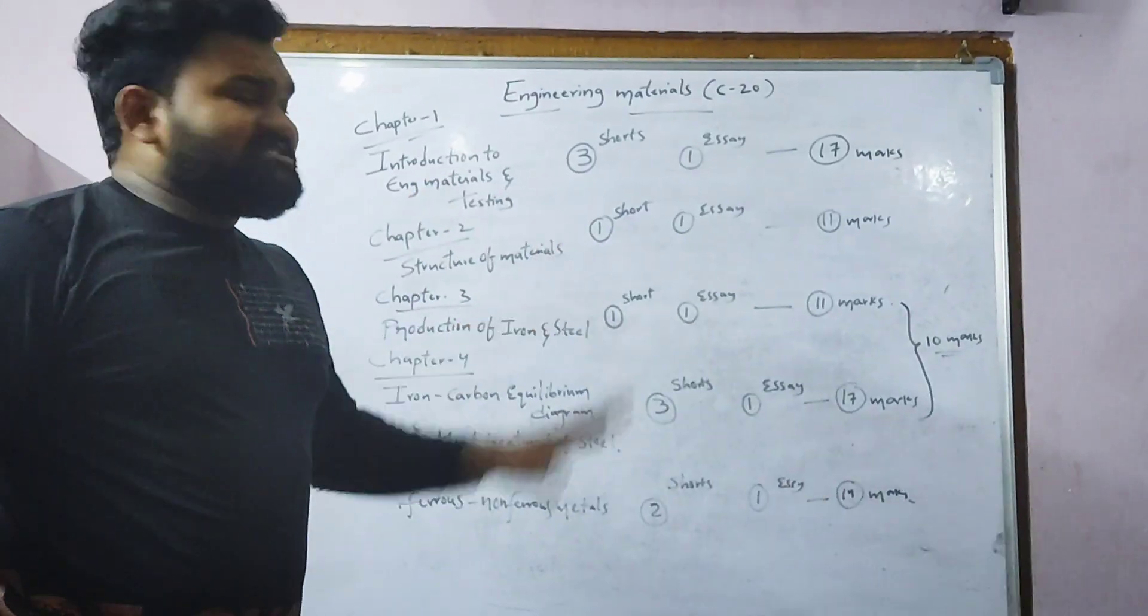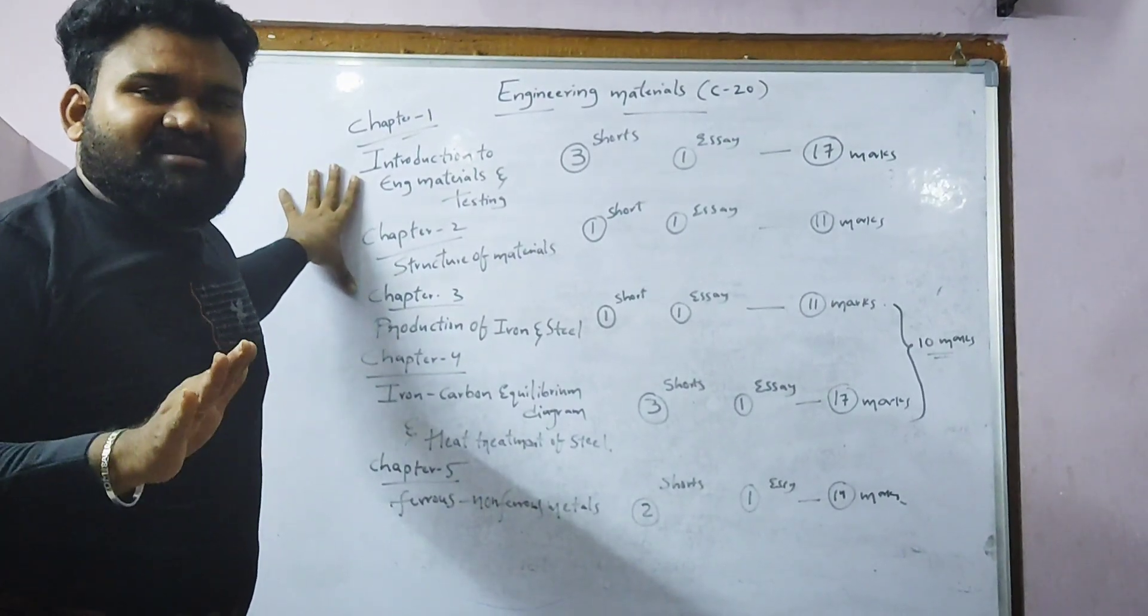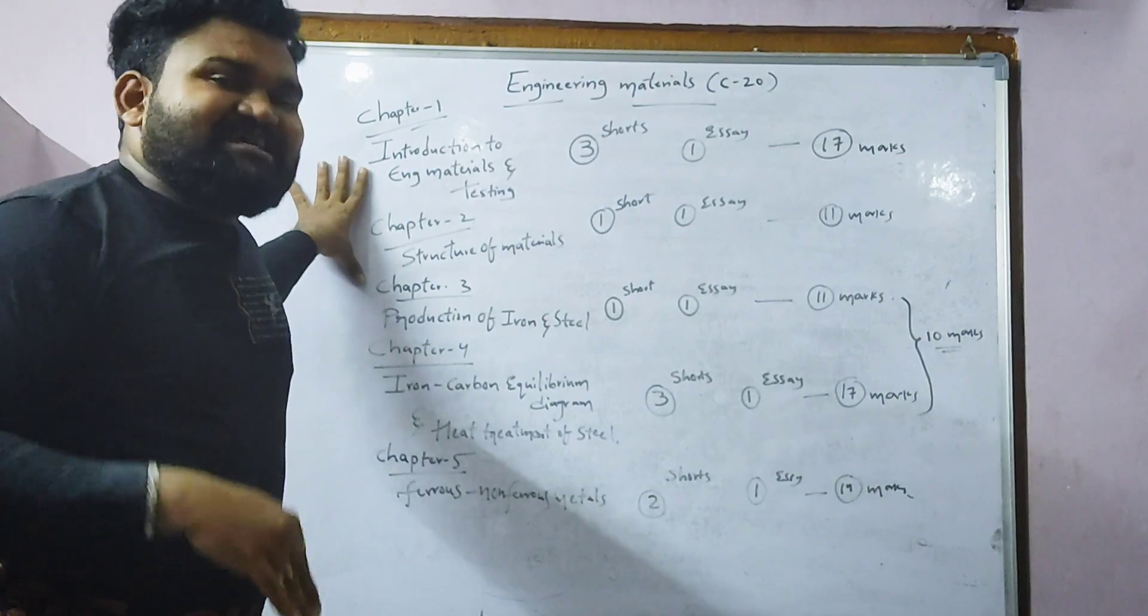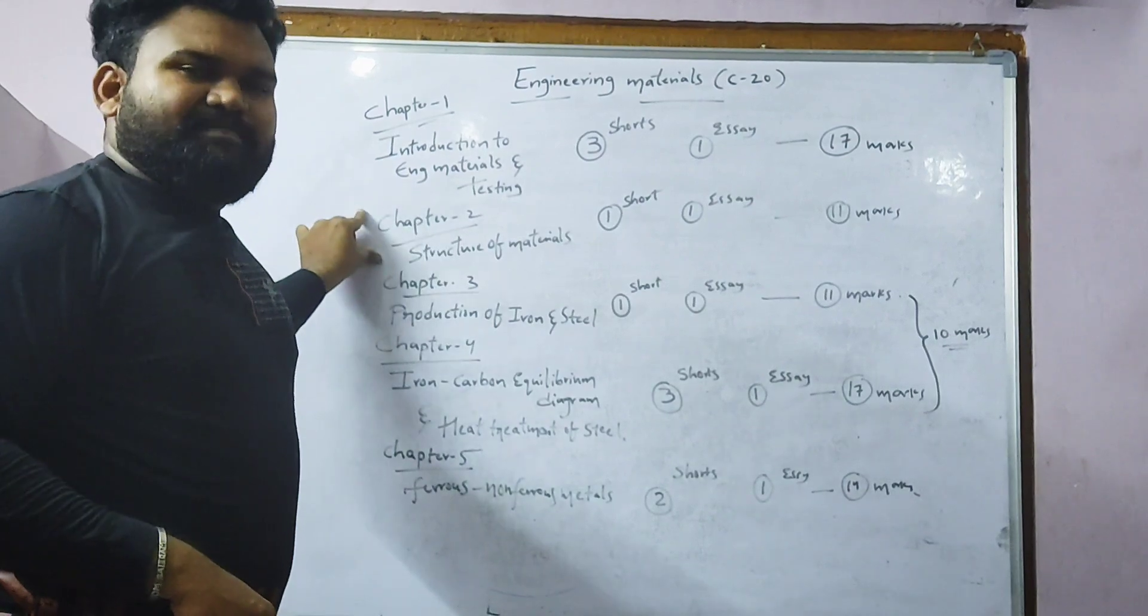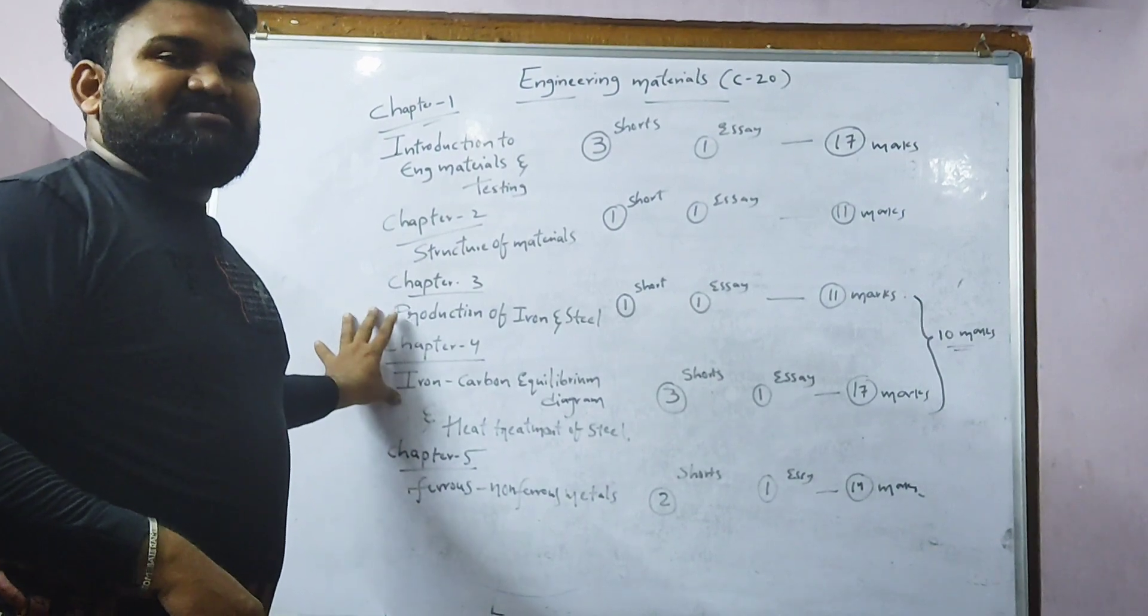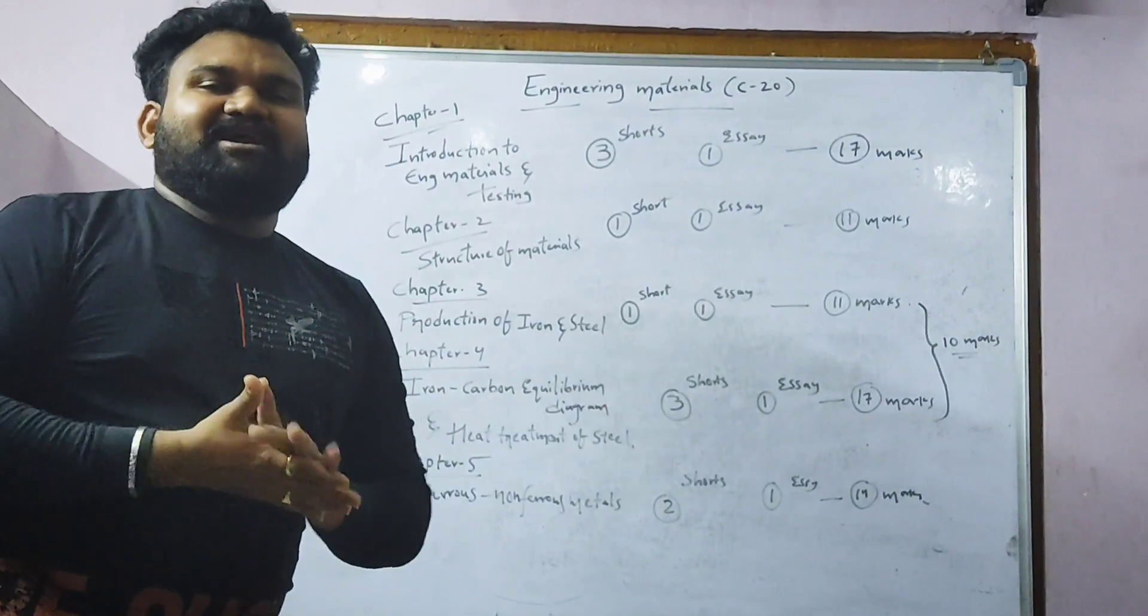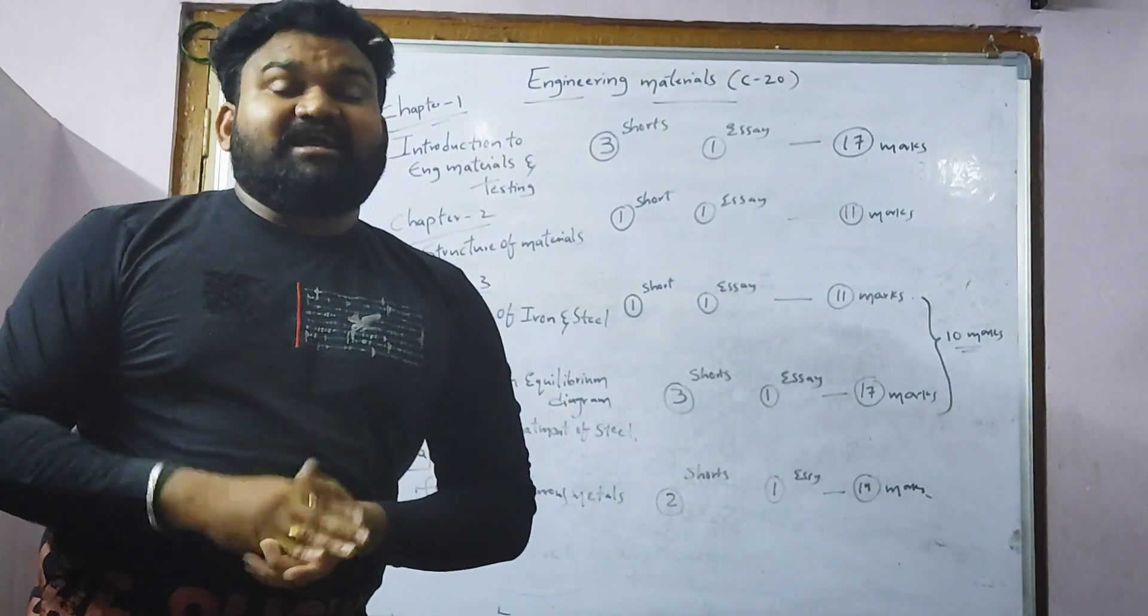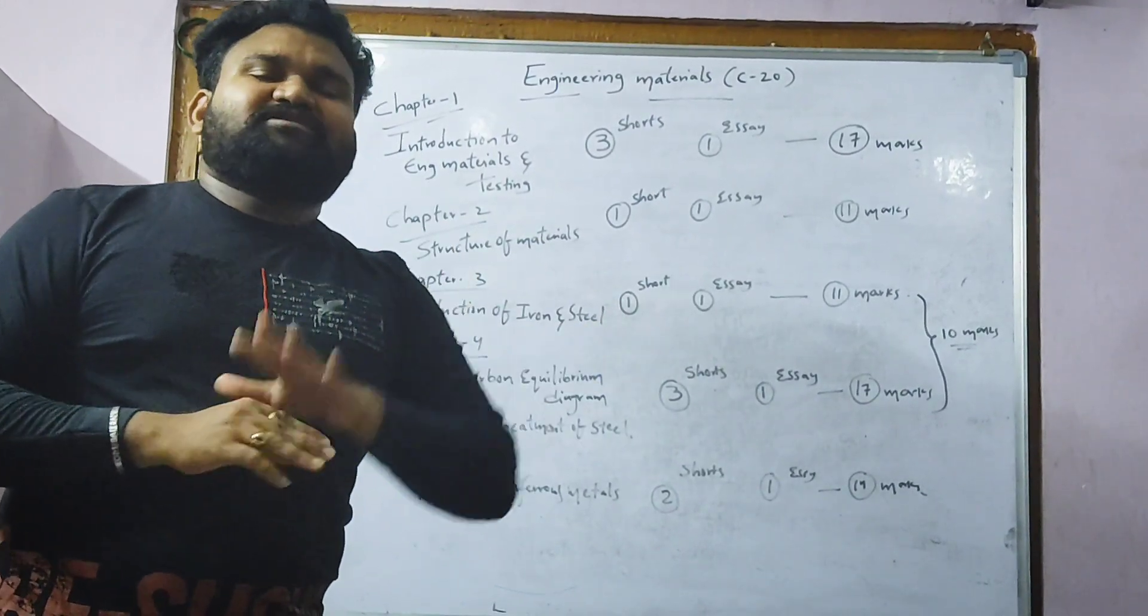Coming to the engineering materials, we have 5 chapters. There are no C16 and C20. One chapter is 30. There is a powder metal aggie in C16. Then, C20 is 30. First chapter and second chapter, third chapter, fourth chapter and fifth chapter. Second chapter is the third chapter. Third chapter is the third chapter.